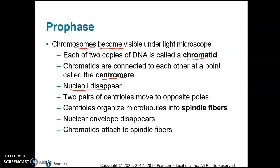Two pairs of centrioles move to opposite poles. Centrioles organize microtubules into spindle fibers, and those spindle fibers help organize the chromosomes and separate them. The nuclear envelope also dissolves, and then the chromatids attach to the spindle fibers. All of this happens in prophase.